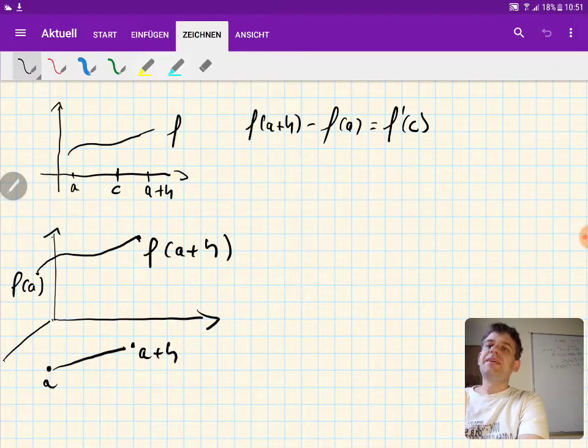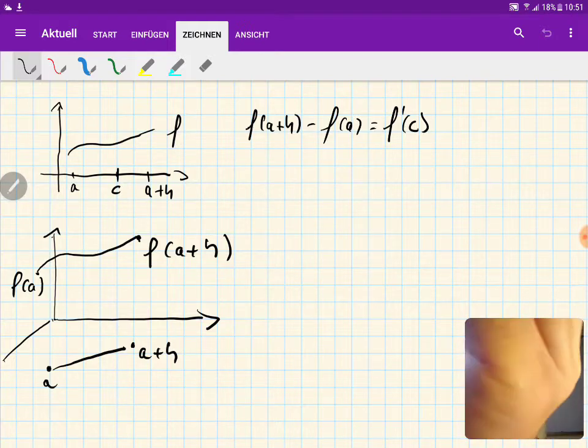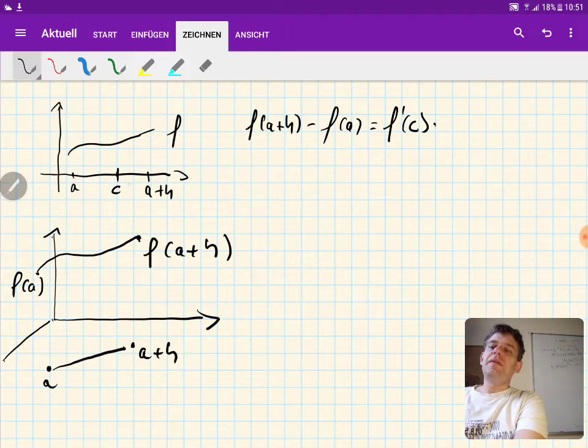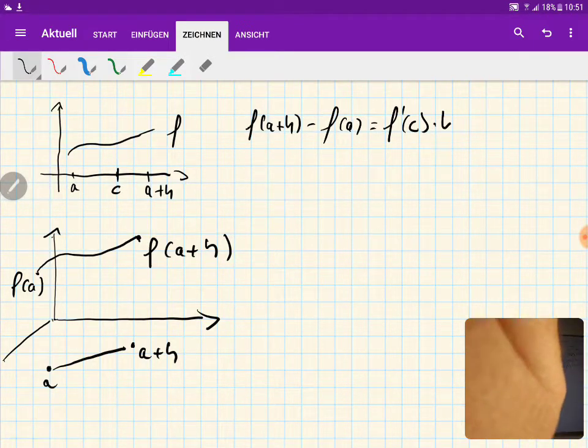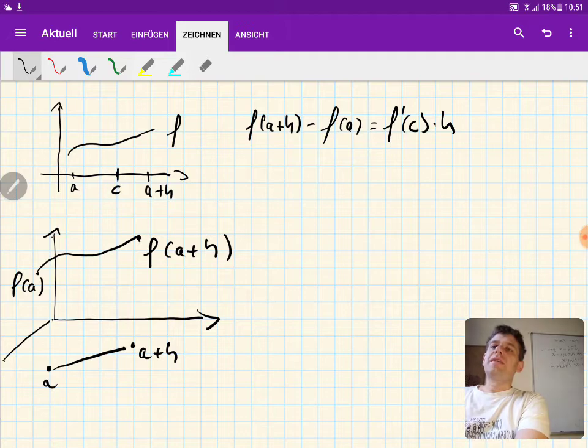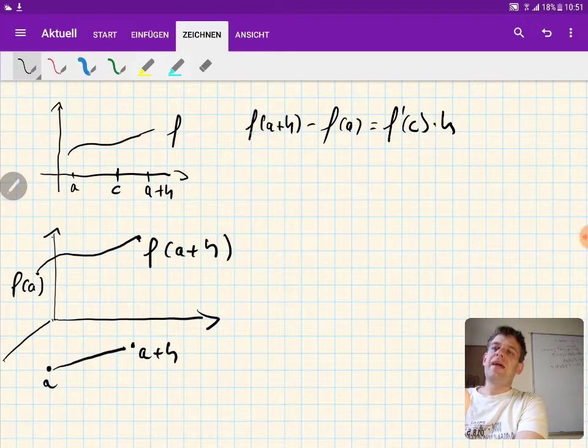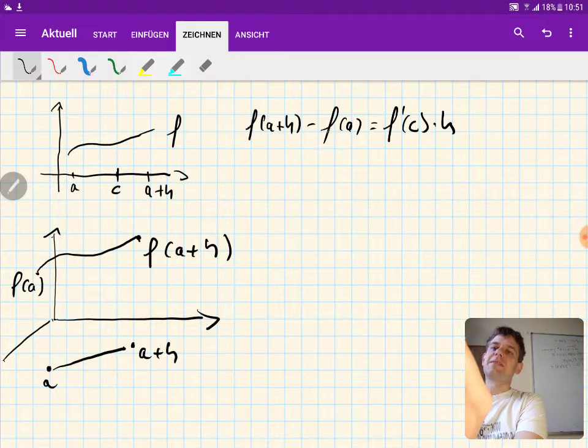and multiply this by the difference from a to a plus h, which is of course h, then this is the same as the difference of the values f at a plus h minus the value of f at a.